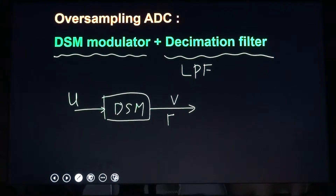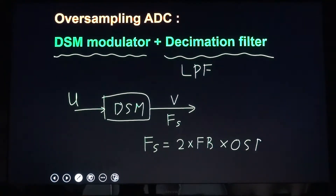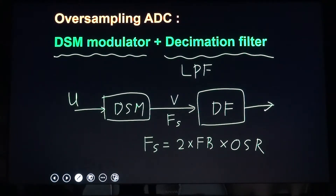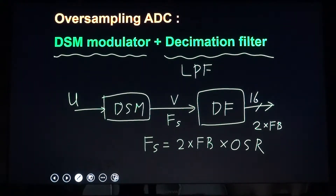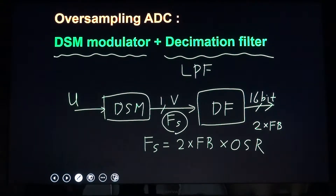This digital data is at a very high data rate. The sampling frequency FS equals the Nyquist rate times the oversampling ratio. The decimation filter is a low-pass filter that generates output at the Nyquist rate with many bits — 16 bits, for example. The decimation filter output is 16-bit parallel data at the Nyquist rate, which is 2·FB.